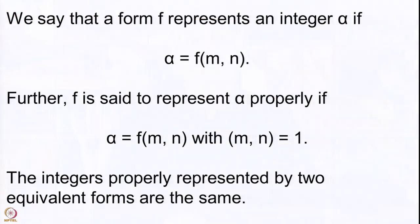What does Lemma 1 say? Whenever M, N have GCD 1, the change of variables gives another pair which continues to have GCD 1. Therefore, the integers properly represented by two equivalent forms are the same. We had earlier seen that the value sets of two equivalent forms are the same. Here we have the stronger statement: the integers properly represented by two equivalent forms are the same set. If α is represented properly by F and F is equivalent to G, then α is represented properly by G as well.